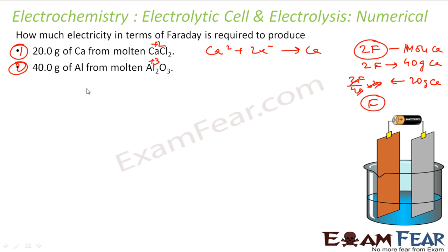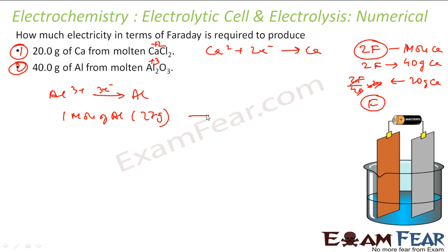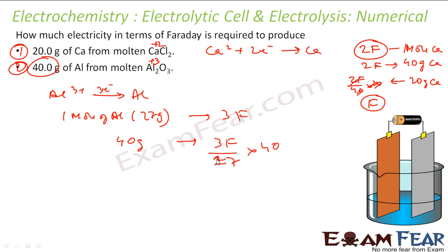For 40 g of aluminium from molten Al₂O₃ (Al³⁺): Al³⁺ needs 3 electrons, so 1 mol of Al (27 g) needs 3F charge. For 40 g: (3F ÷ 27) × 40 = 4.44F. So 4.44 Faraday of charge is required to produce 40 g of aluminium.